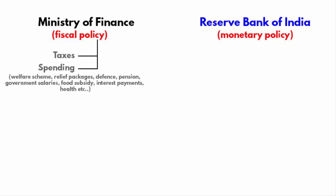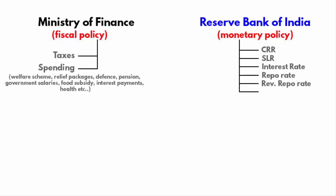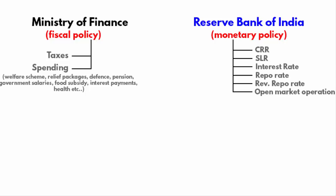Now coming to the monetary policy. The main tools of the monetary policy are CRR, SLR, Bank Rate, Repo Rate, Reverse Repo Rate and Open Market Operations, which means buying and selling of government securities. The RBI uses these tools to control the flow of money in the market, helping to control inflation and liquidity in the economy.